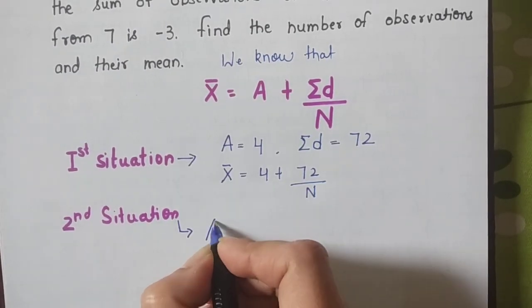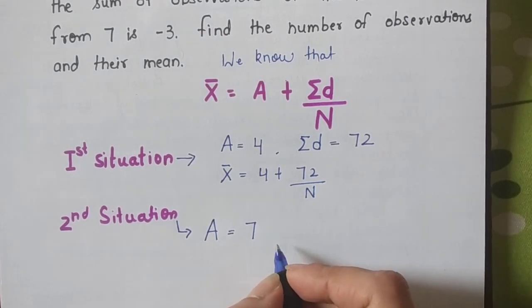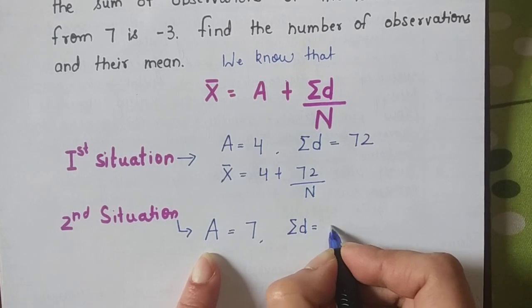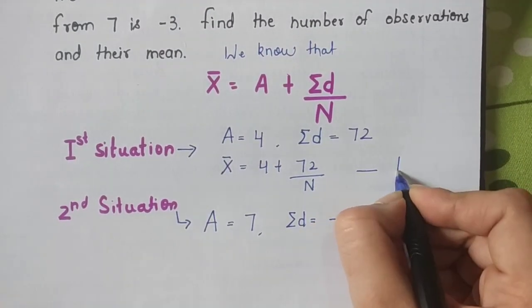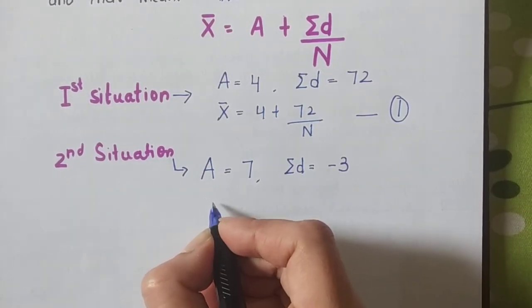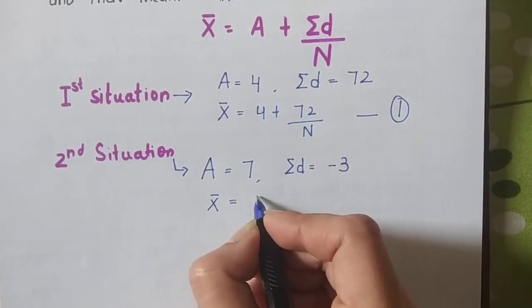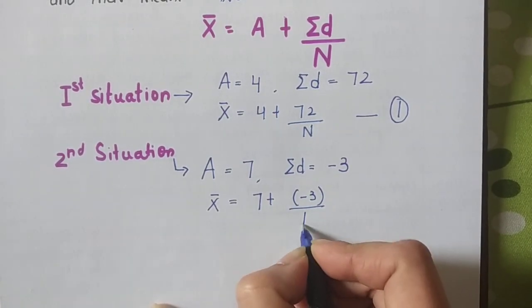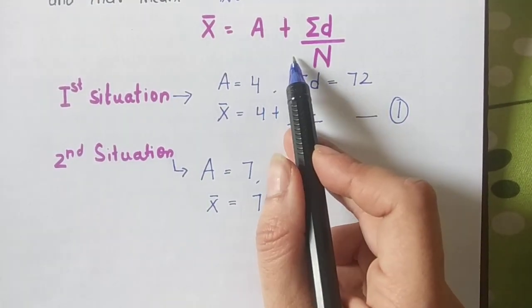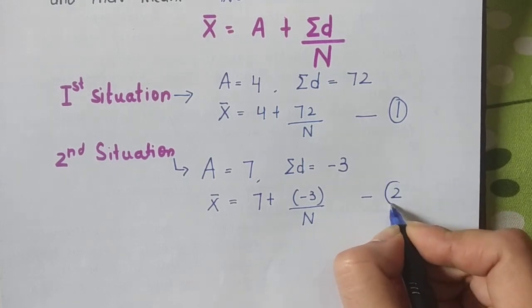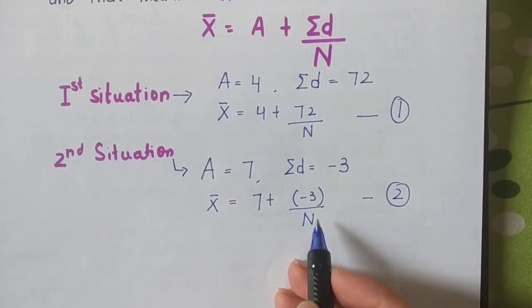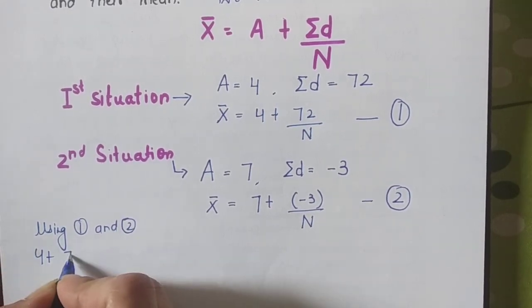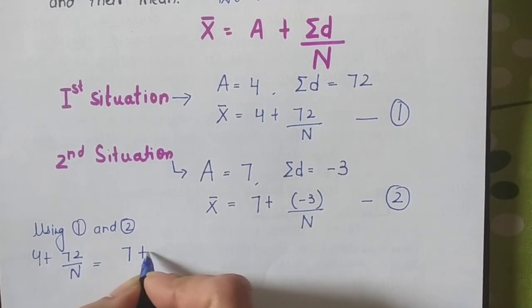If I put this equation in the second situation, assumed mean is 7 and the sum of deviations is minus 3. If we call the first equation 1, and put these figures in the formula, we get mean = 7 + (-3)/n. This is equation 2. Now I have got two equations.